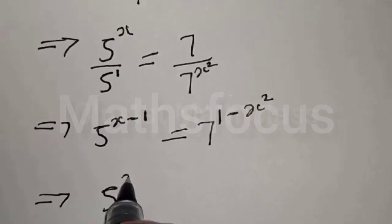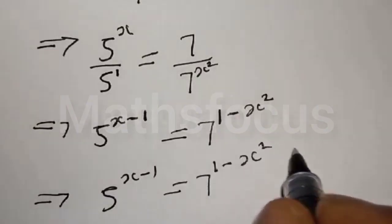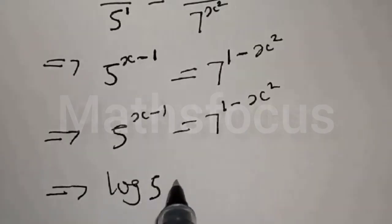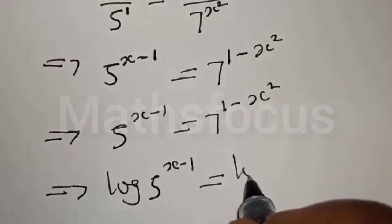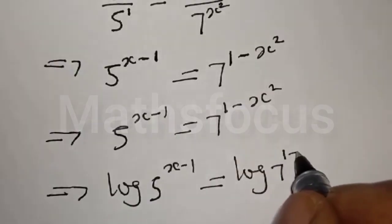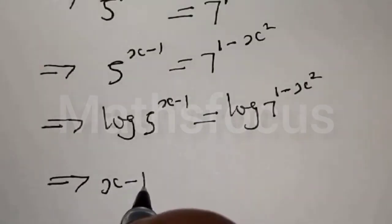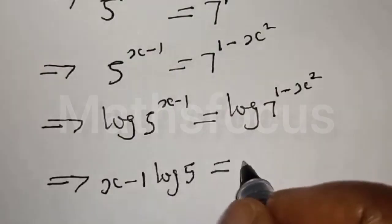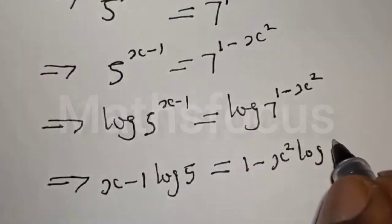We have 5 raised to power x minus 1, equal to 7 raised to power 1 minus x squared. Let's take the log of both sides. We have log of 5 raised to power x minus 1, equal to log of 7 raised to power 1 minus x squared. So x minus 1 times log 5 equals 1 minus x squared times log 7.